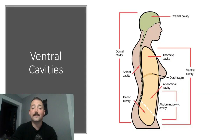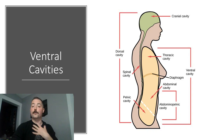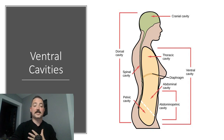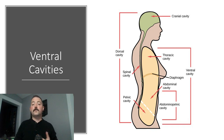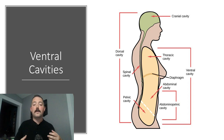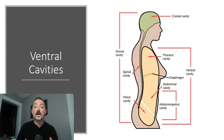The ventral cavities are found in your torso. First we've got your thoracic cavity, which would be your chest. And then separating that from your abdominal pelvic cavity below, we have this thick muscle called the diaphragm. Besides separating the two cavities, the diaphragm's main purpose is to help us breathe.